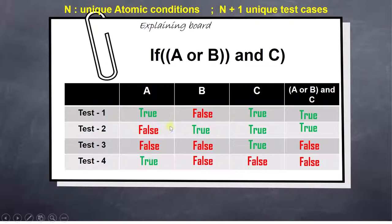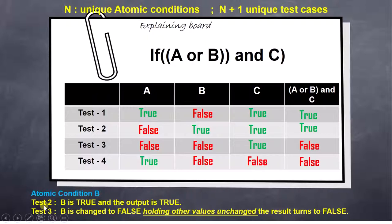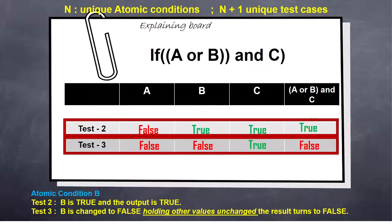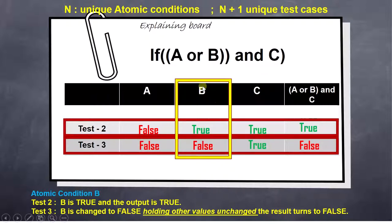Now let's analyse condition B. For condition B we take test case 2 and test case 3. When B is true, the output is true. When B is changed to false — holding other values unchanged (A is false in both, C is true in both) — the value of B changing also affects the result. Other values are unchanged, the value of B is changed, and this change has resulted in a change in the decision.